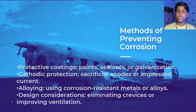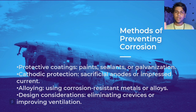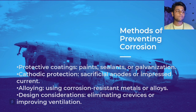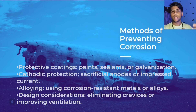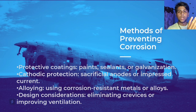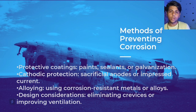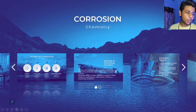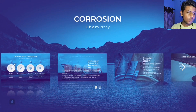Fourth, design considerations: during design you can structure a metal or substance in a way that prevents corrosion. For example, using plastic clips when joining two metals to separate them. Also, eliminating crevices and improving ventilation so that air can move easily from one part of the metal to another.